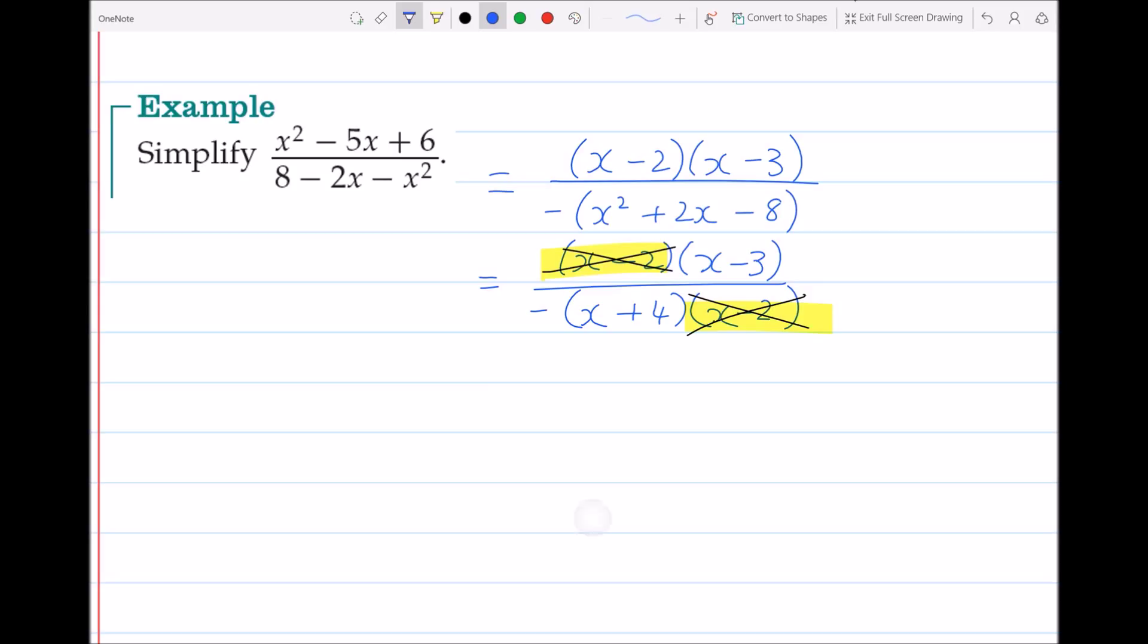So we simply end up with x minus 3 over negative x plus 4, or we could also write that as x minus 3 over 4 minus x. That's our final answer.